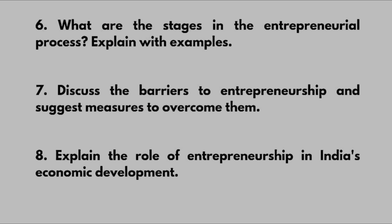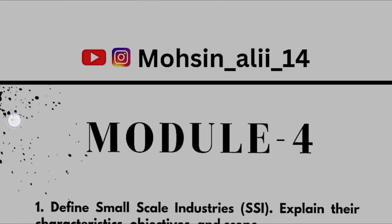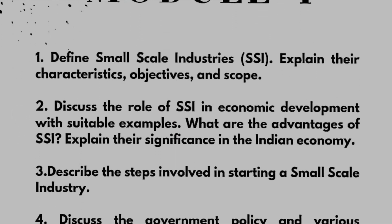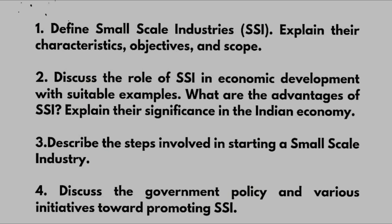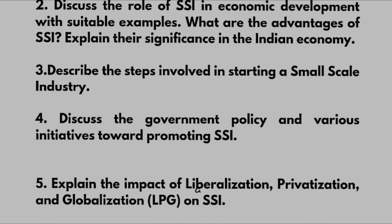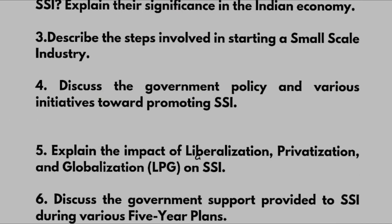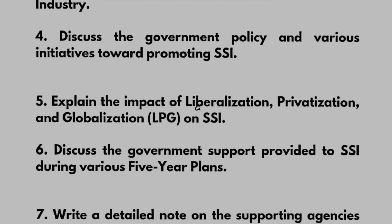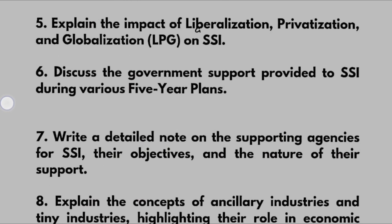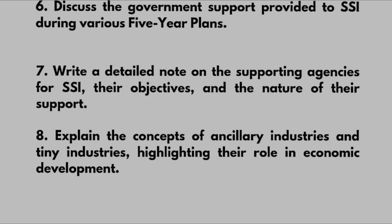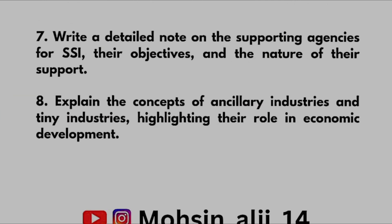These three modules are the passing package. For scoring, you must also cover Modules 4 and 5. In Module 4: Define small scale industries, explain their characteristics, objectives, and scope. Discuss the role of SSI in economic development with examples and explain their significance in the Indian economy. Describe the steps involved in starting a small scale industry and discuss government policy and initiatives towards promoting SSI. Explain the impact of liberalization, privatization, and globalization on SSI, and government support during various five-year plans. Also write a note on supporting agencies for SSI, and explain the concepts of ancillary and tiny industries and their role in economic development.